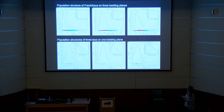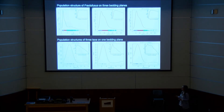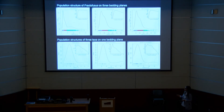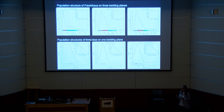We can also look at different taxa on the same bedding plane to see if particular events are affecting them - to look for a shared history. For Fractifusis, we can see a discrete peak and more blurred features, which might represent a break in recruitment or reproduction, or a positive feedback where if you're large it's easier to get food, so you grow larger.